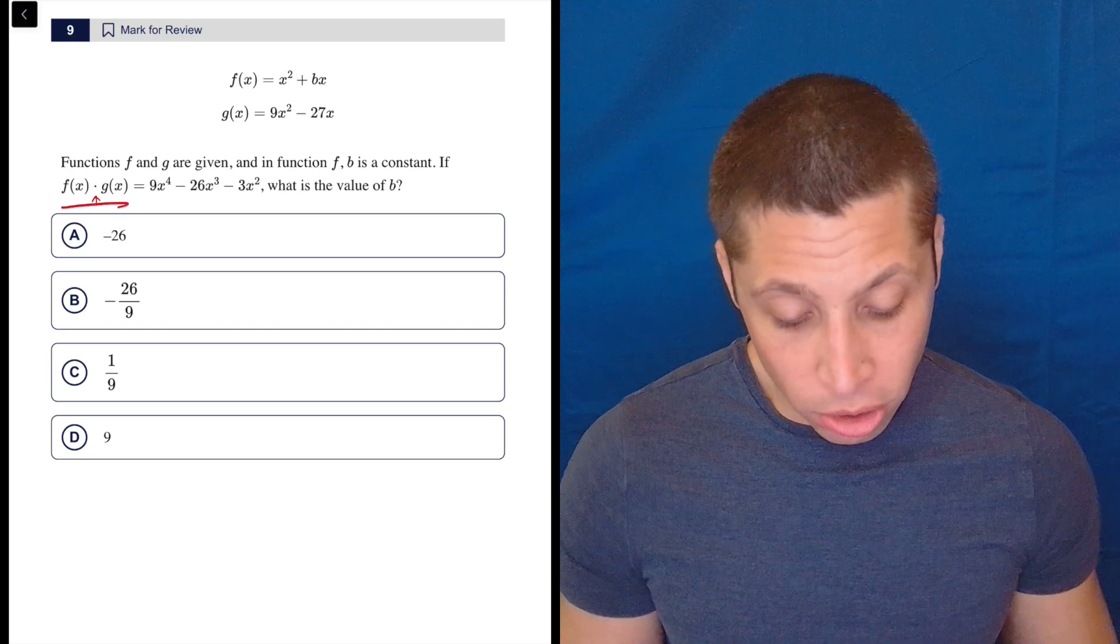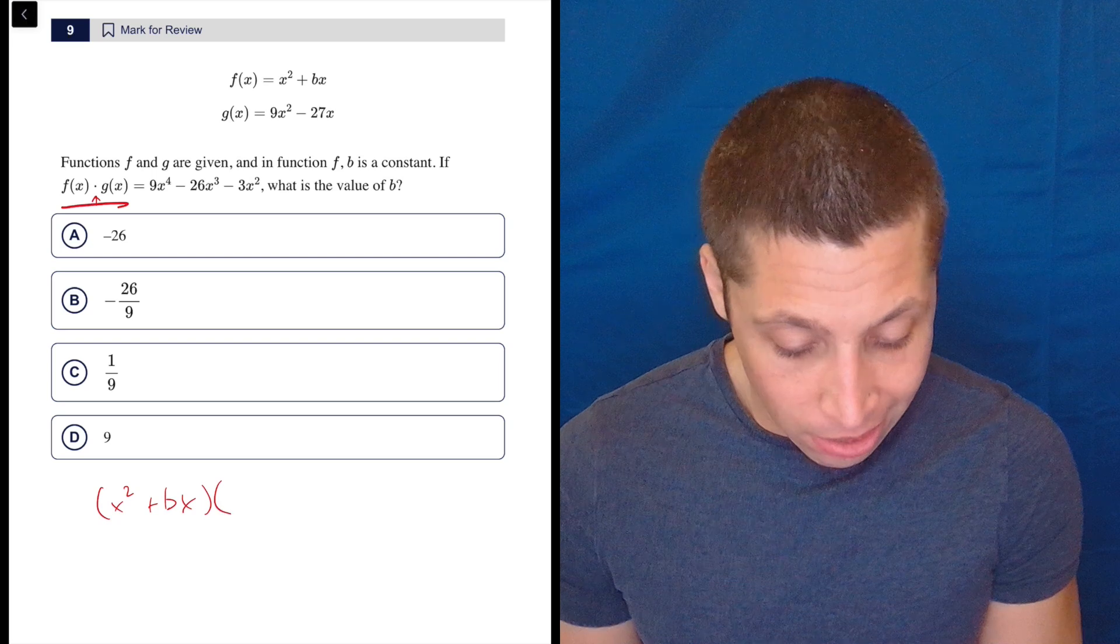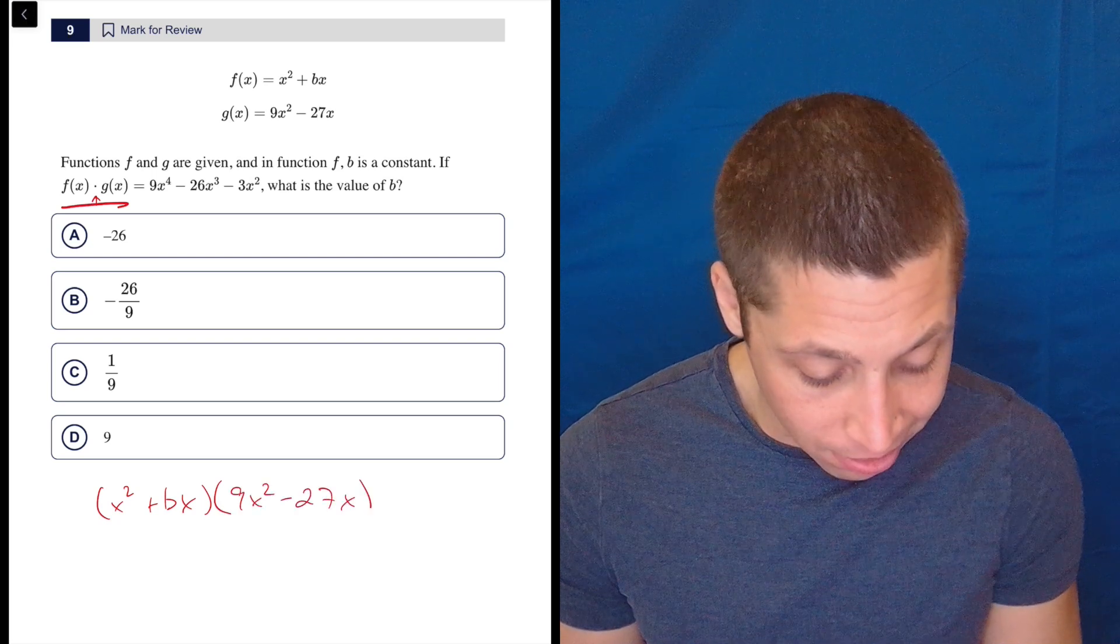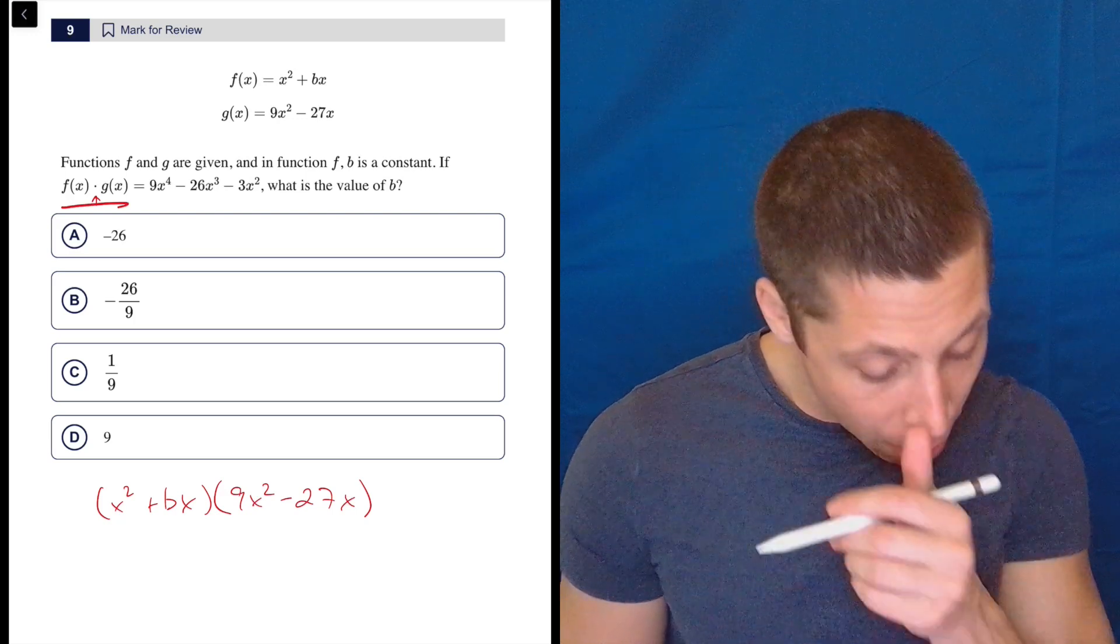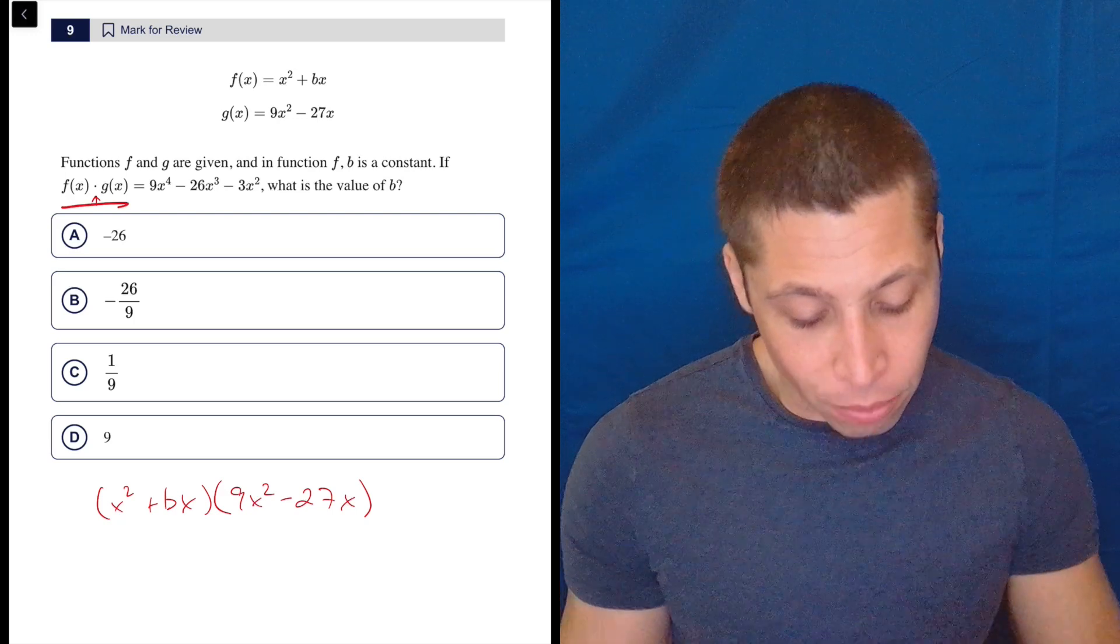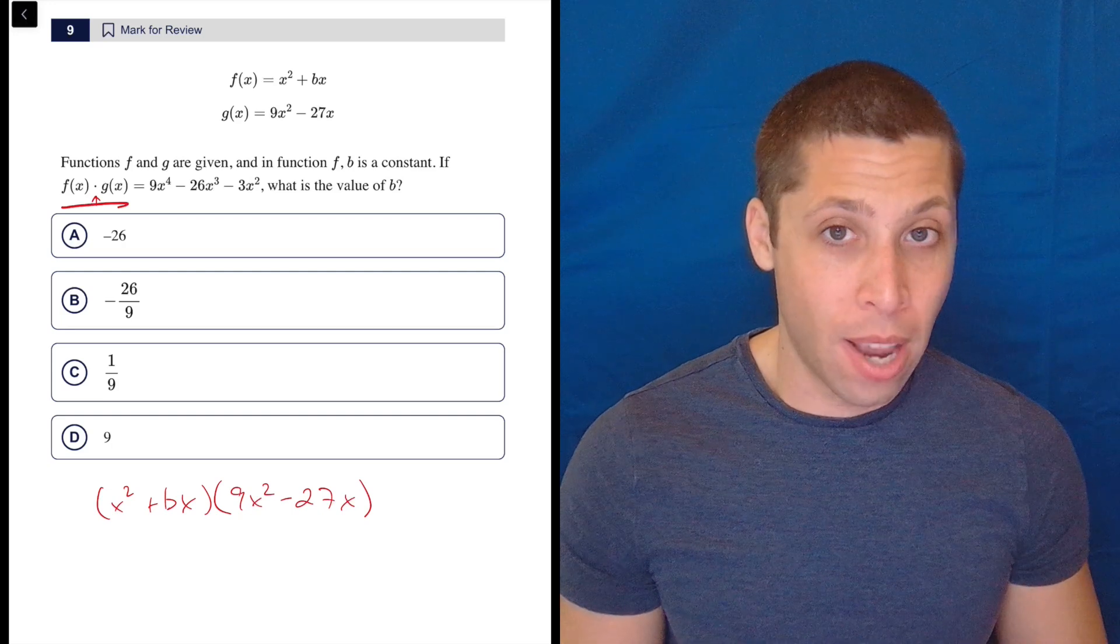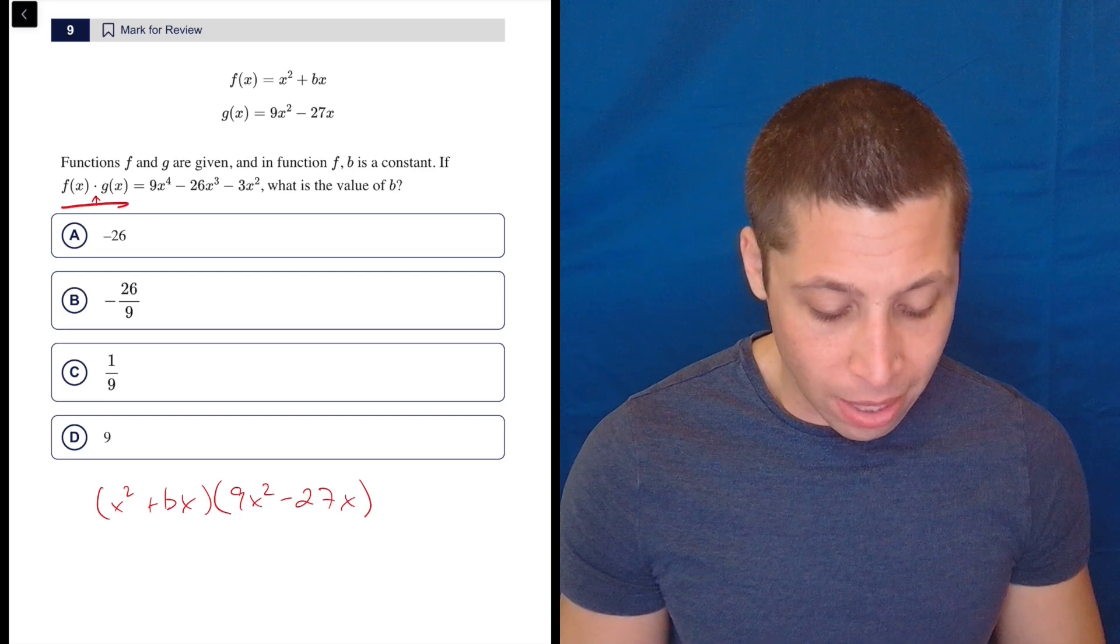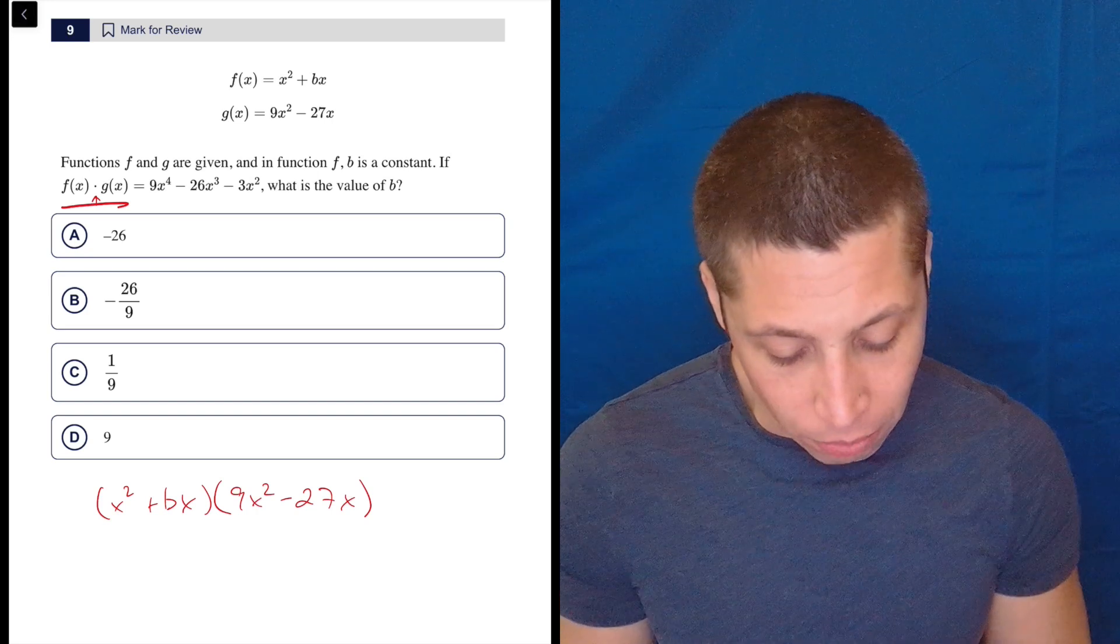So you could just write that on your scratch, so x^2 plus bx times 9x^2 minus 27x, and that's going to equal this other thing. Now, instead of writing it next to it, what I'm going to recognize is I'm going to have to foil this thing out, and I want to know where that b gets played into things. So it's going to come into two places. So if you play it safe, you might just foil everything. It's not the end of the world.